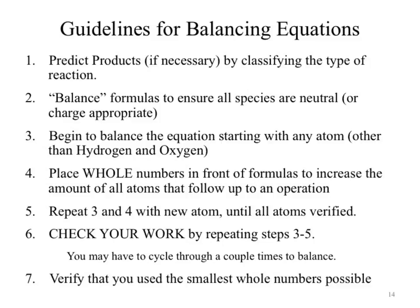It does not matter what atom or complex ion you start balancing with, but as a general rule of thumb avoid hydrogen and oxygen until the very end, because they tend to show up in many different places. If hydrogen appears in three places on the reactant side and three on the product side, it becomes very difficult to balance. If you're lucky, when you get to them at the end they've already balanced themselves out. You balance by changing whole numbers in front of the formulas—the coefficients—then repeat until every atom on the reactant side equals every atom on the product side.